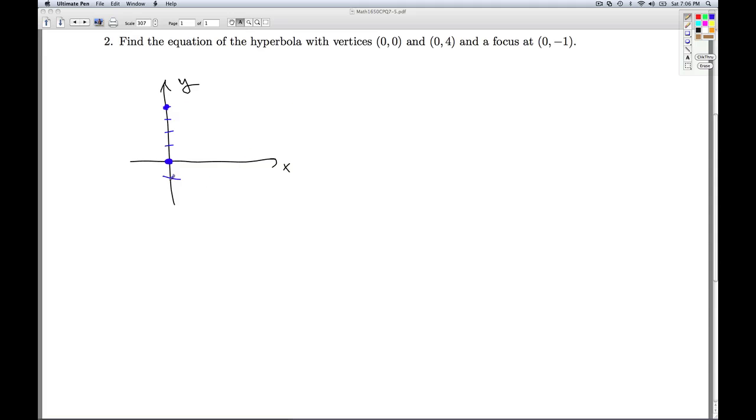And we've got a focus at (0,-1). So this tells us right away that this hyperbola opens up and down, because its transverse axis is along the y-axis. That means that we've got a y squared minus x squared hyperbola on our hands.